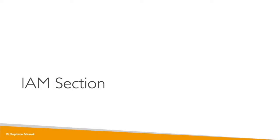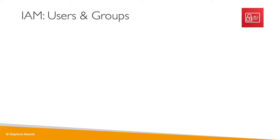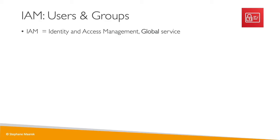Welcome to the first deep dive on an AWS service. The first one is called IAM, which stands for Identity and Access Management. It is a global service because in IAM, we are going to create our users and assign them to groups.